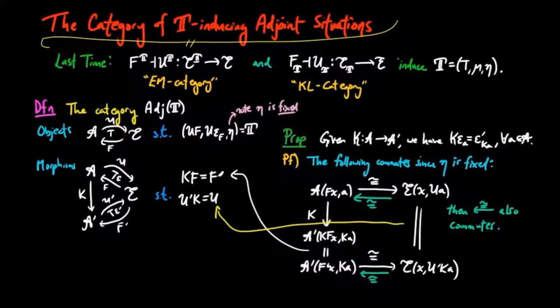Remember that the iso of the adjoint situation is given by applying the right adjoint functor to the morphisms, and precomposing by the unit. So the top morphism takes an a-morphism F to UF precomposed by η_X. While on the left hand side, the functor K takes F to KF, which is also a morphism from F prime X to Ka. We can then apply the isomorphism induced by the adjoint situation to give us U prime KF precomposed by η_X. Remember that η_X is fixed for both of these adjoint situations, which we can then see is equal to UF precomposed by η_X by the equality U prime K equals U.